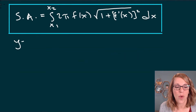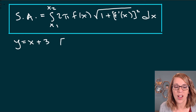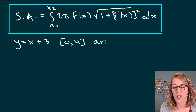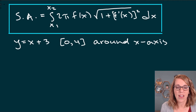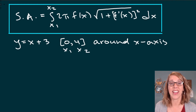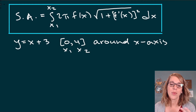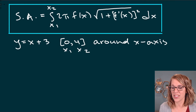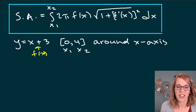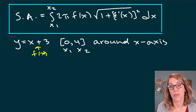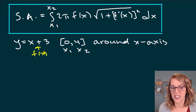In this first example, we're going to take the function y equals x plus 3, along the interval 0 to 4, and rotate it around the x-axis. I have the formula above, and we already have our x1 and x2 identified. We have f of x as our function, and I need to find f prime of x first.